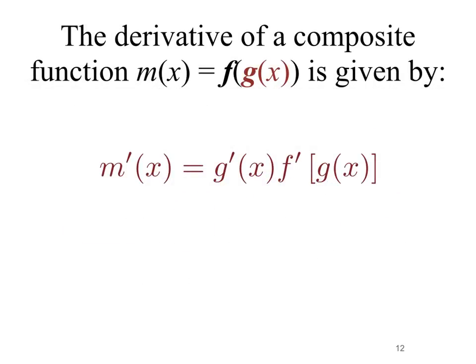The derivative of a composite function m of x, which is f of g of x, is given by m prime of x equals g prime of x times f prime of g of x. This states that if we have a composite function — one function stuck inside of another — the way we take the derivative is first we take the derivative of the inside function, then we take the derivative of the outside function and multiply those together.